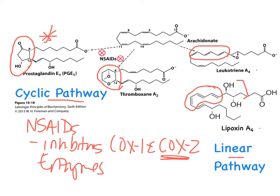COX-1 also provides a cytoprotective effect in the stomach, so some COX-2 selective inhibitors were developed to circumvent the GI upset that occurs with NSAIDs. The mechanism of action for NSAIDs is the inhibition of the COX-2 isozyme, which prevents the formation of prostaglandin H2 responsible for inflammation.